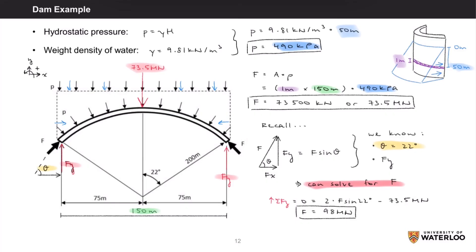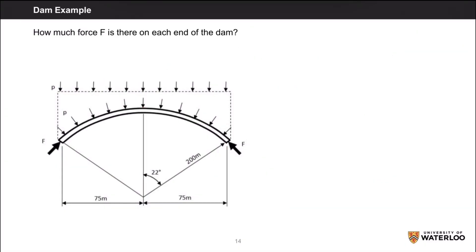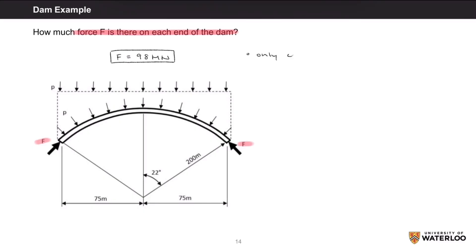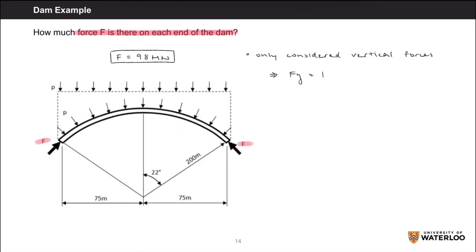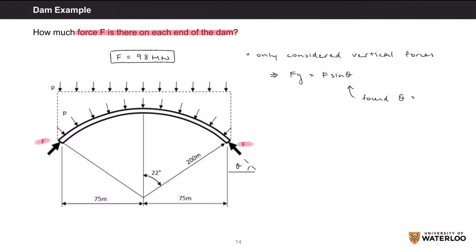That's nearly 435 million pounds, just to give you an idea of how much force these dams are really retaining. To answer the question — how much force F is there on each end of the dam — we found that F is equal to 98 meganewtons. As a recap, we were able to find this value by taking only the vertical forces into consideration, because Fy equals F times sine theta. Since we found the angle was 22 degrees and solved for Fy, all we had to do was rearrange and isolate for F.